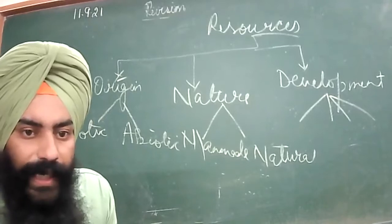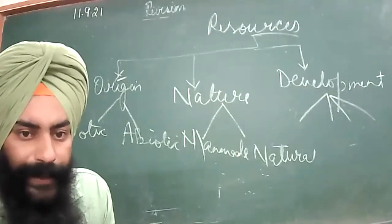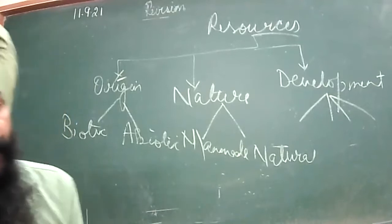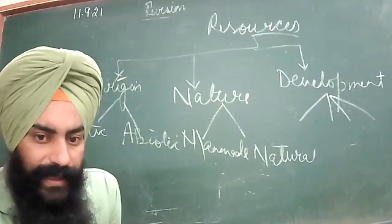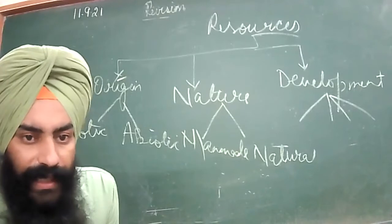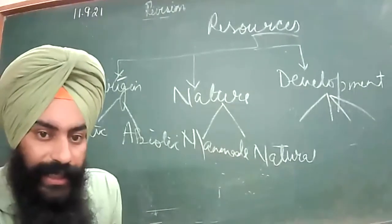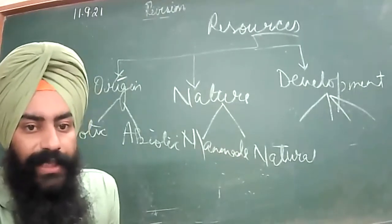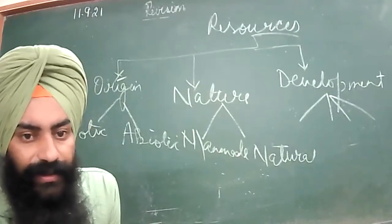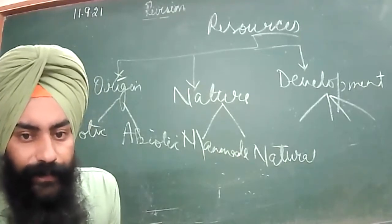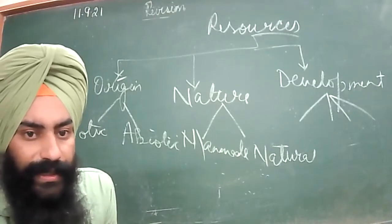The eighth difference: examples of exhaustible resources are coal, petroleum, and natural gas. Inexhaustible resources include sunlight, water, and soil — which are renewed and recycled by nature. These are the major classifications of resources.